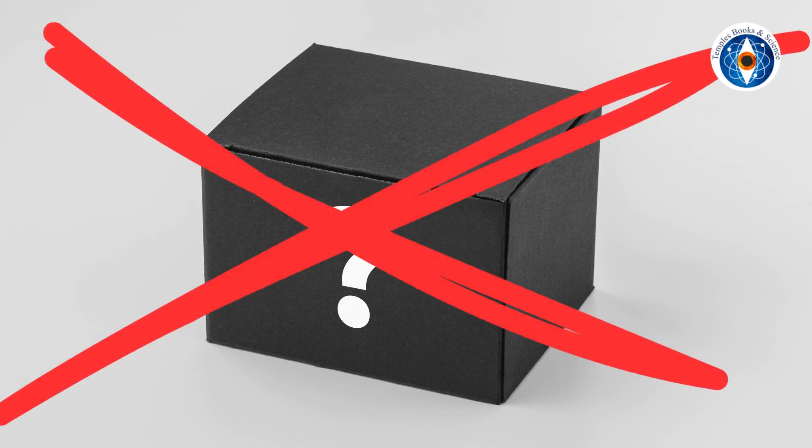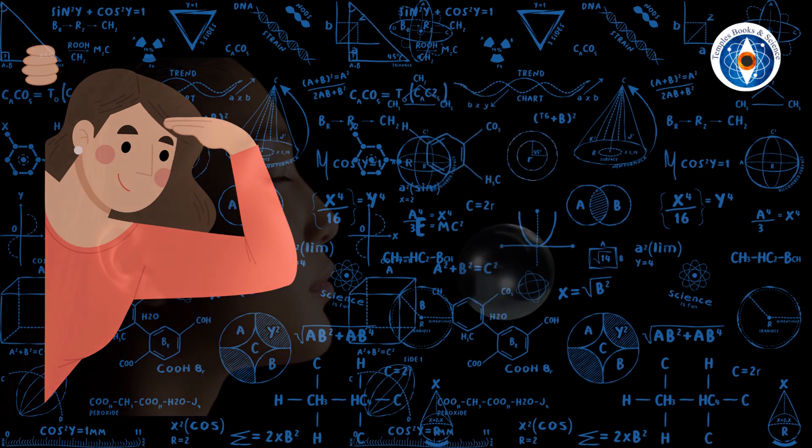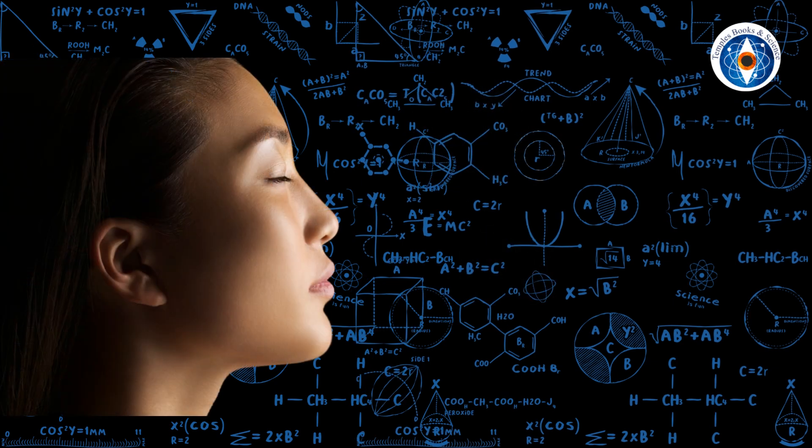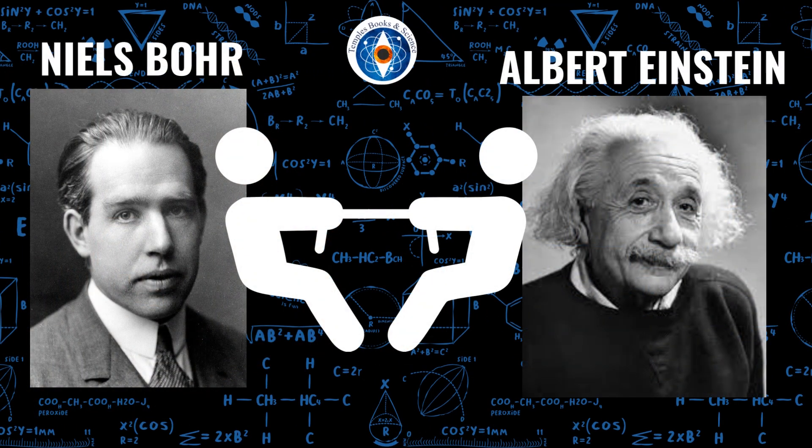On the other hand, quantum physics claimed that there is no box at all. Particles appear only when you see them and cease to exist when you don't see them. Physics was deadlocked between these two explanations: quantum physics, which claimed that particles do not exist until they are observed, and Einstein, who claimed they do exist whether we see them or not. We just need to find the missing information that is hiding them from us.